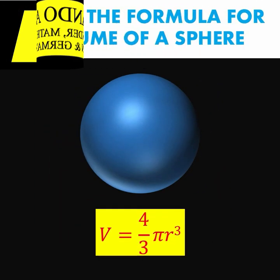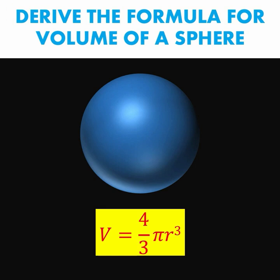In this lesson, I'm going to show you how to derive this formula: v equals 4 over 3 pi r cubed.